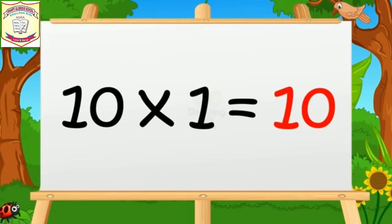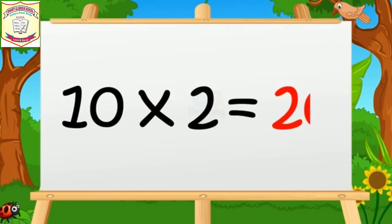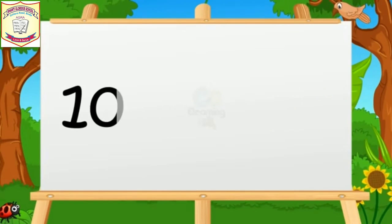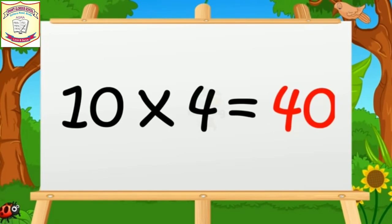Table of Ten. Ten ones are ten. Ten twos are twenty. Ten threes are thirty. Ten fours are forty.